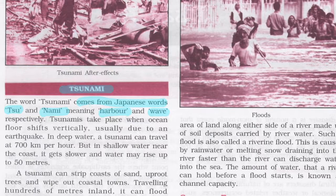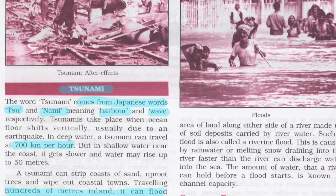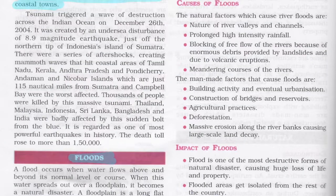A tsunami can strike coasts, uproot trees, wipe out coastal towns, and travel hundreds of meters inland, flooding coastal areas. A tsunami can travel at 700 kilometers per hour, but in shallow water near the coast it slows down and the water may rise up to 50 meters.